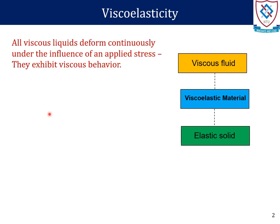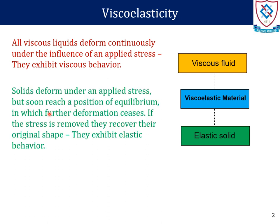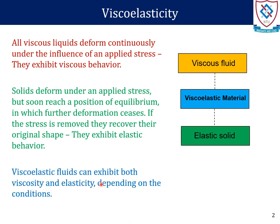All viscous liquids deform continuously under the influence of an applied stress — their behaviour is called viscous behaviour. Solids deform under an applied stress and soon reach a position of equilibrium in which further deformation ceases. If the stress is removed, they recover their original shape — we say that they exhibit elastic behaviour. Viscoelastic materials can exhibit both viscosity and elasticity depending upon the conditions.